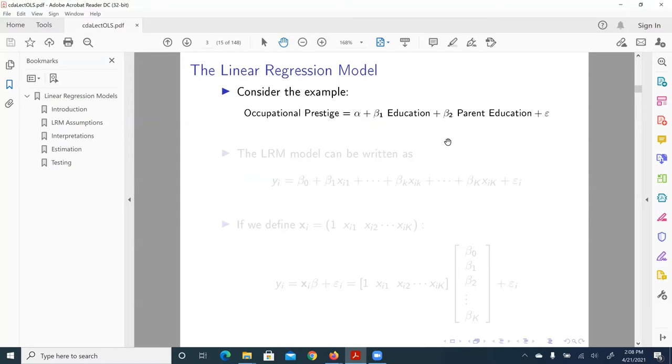What is alpha? If you learn high school algebra or introductory math at the college level, alpha corresponds to intercept, the starting point, plus beta one education. So beta one is the slope for the education variable, plus beta two, the slope for parent education, plus an error.